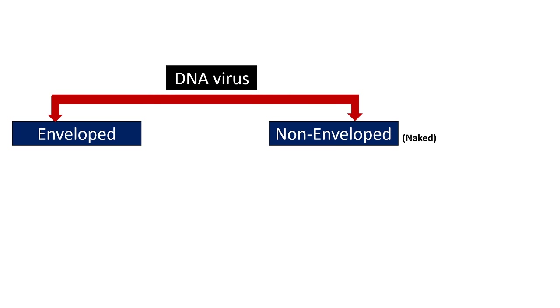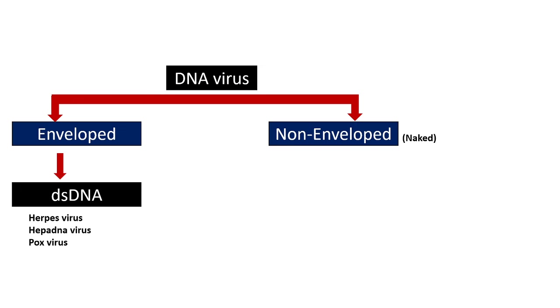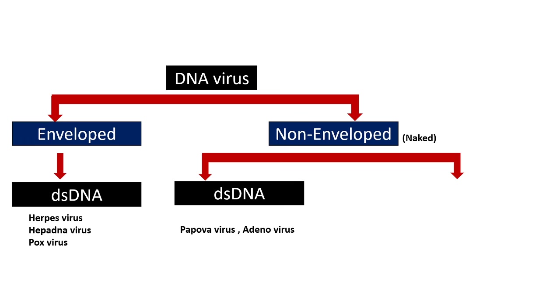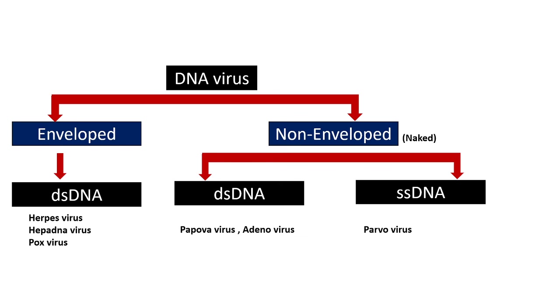Now let's talk about the classification of viruses. Viruses are classified based on their genetic material, their symmetry, and the presence of an envelope. There are DNA viruses which can be either enveloped or non-enveloped (naked). Enveloped DNA viruses may have double-stranded DNA — key examples include herpesviruses, hepadnaviruses, and poxviruses — or single-stranded DNA. Non-enveloped DNA viruses include double-stranded examples such as papovaviruses and adenoviruses, and single-stranded examples such as parvoviruses, which are naked.